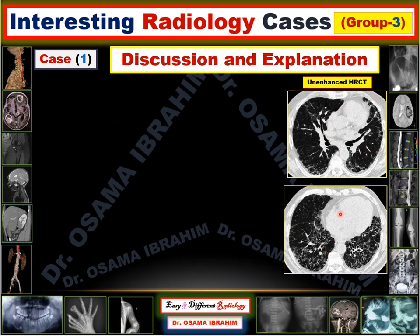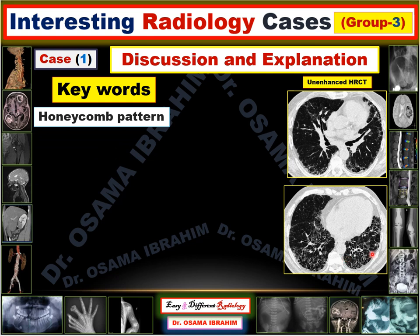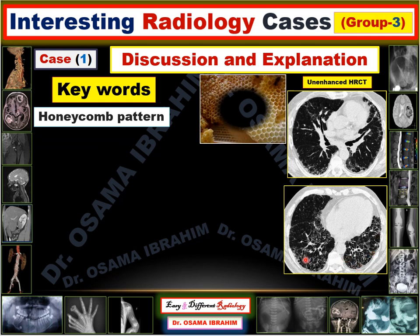This unenhanced CT has key points. First, at basal levels you can see the bronchi which are dilated and attracted — this is called traction bronchitis. Also, there are subpleural cystic lesions arranged in rows with thick walls. All these cystic lesions are peripherally distributed with thick walls — this is called the honeycomb pattern, seen in the posterior lung fields.